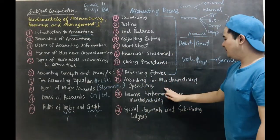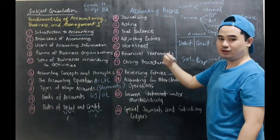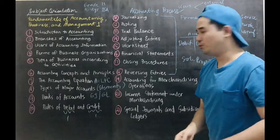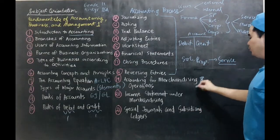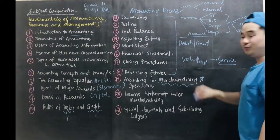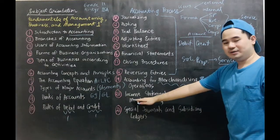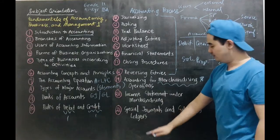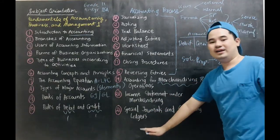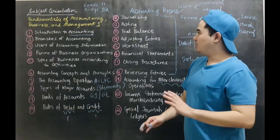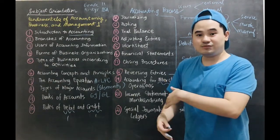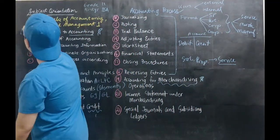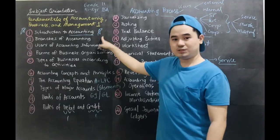After you have already learned the accounting process for service companies, it's time for you to know merchandising. And then you will also be talking about the income statement under merchandising operations and special journals and subsidiary ledgers. We will formally start the lessons at the next video because the next video will be talking about this one. The next video will be talking about this one.